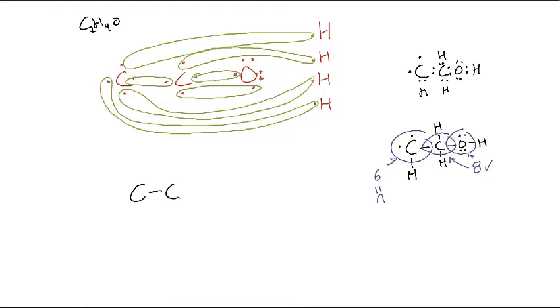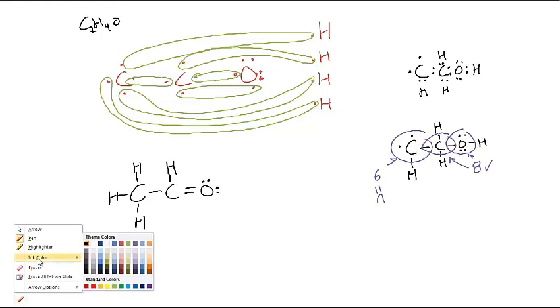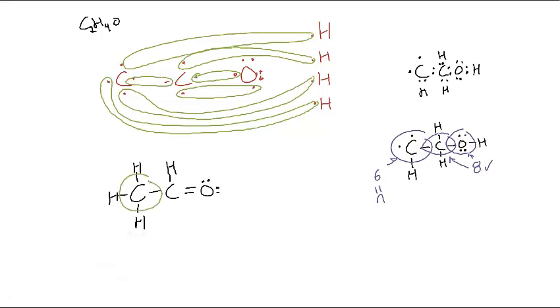So C, C, O. I'm taking some liberties here, I'm not drawing the dots in. Now remember, each of these sticks represents two valence electrons because it's a covalent bond. So if I circle each of my center atoms and my outside atom: two, four, six, eight. Two, four, six, eight. Two, four, five, six, seven, eight. They all have eight valence electrons.